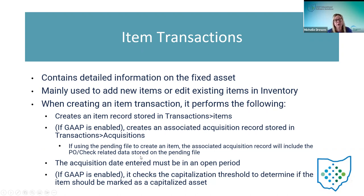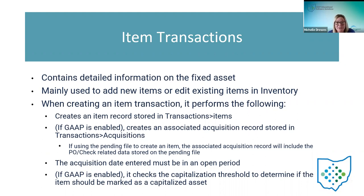The acquisition date when creating an item must be in an open period. If I've got fiscal year 22 and 23 both open and I'm still creating items in 22, that period is open so it'll allow item creation in that period. If the GAP flag is enabled, it's going to check the capitalization threshold to determine if the item should be marked as a capitalized asset. That's why setup needs to be done ahead of time — when an item gets created, it looks at the threshold, the open year, and establishes the proper capitalization status.